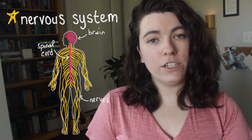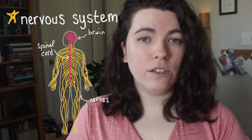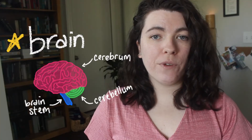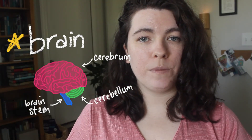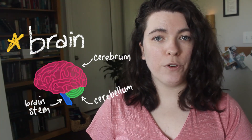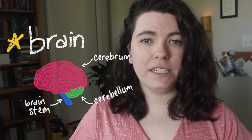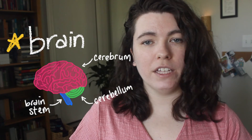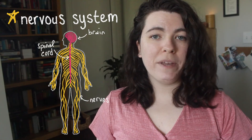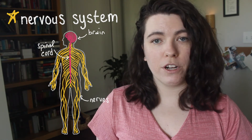All of these body processes, and many more, are directed by the nervous system, which receives, processes, and transmits information to control the body. The nervous system is made up of the brain, the spinal cord, and nerves. There are three main parts of the brain: the cerebrum, which is responsible for seeing, speaking, and thinking; the cerebellum, which is responsible for movement and position; and the brain stem, which regulates breathing, heart rate, digestion, and other involuntary essential processes of life. Information travels from the brain down the spinal cord and throughout the body through nerves, and information travels back to the brain from the body on the same pathways.